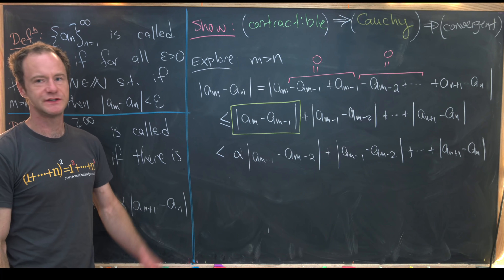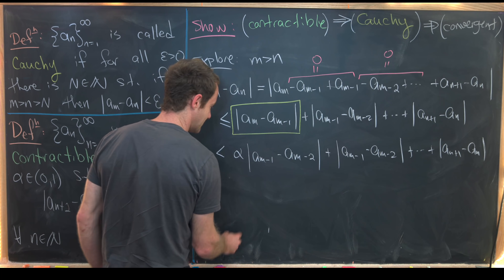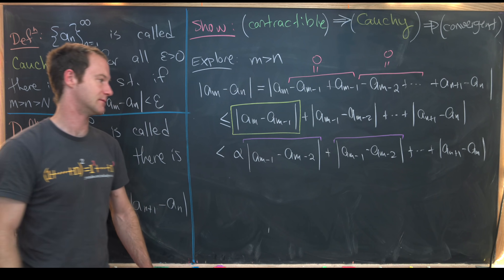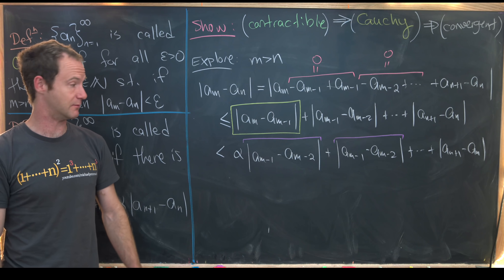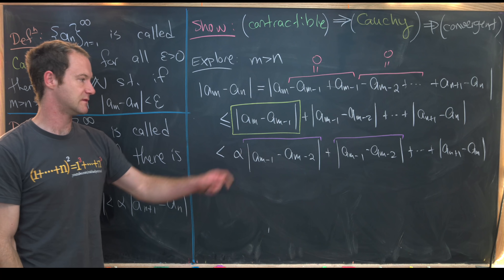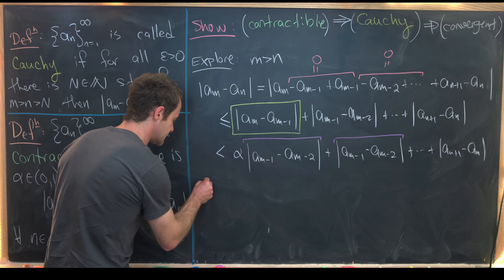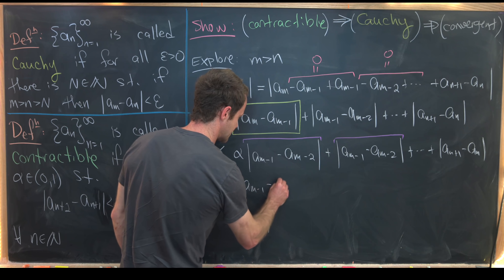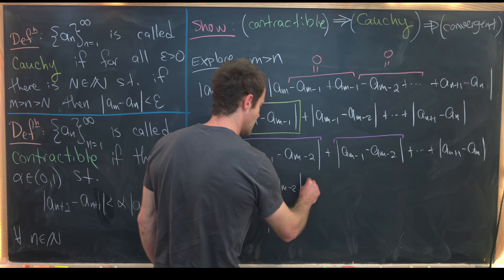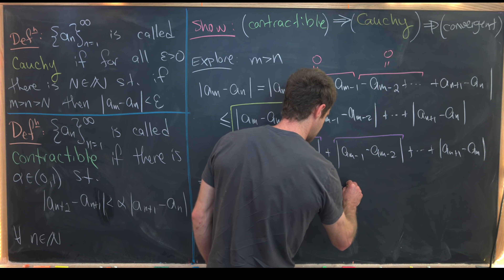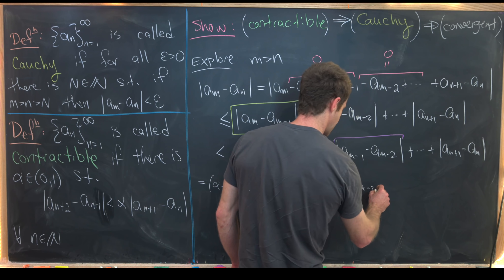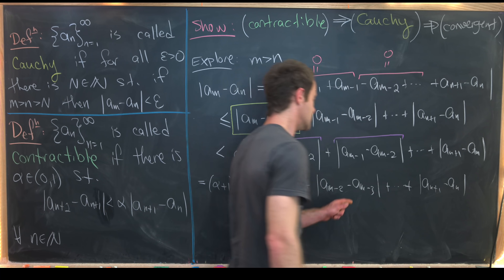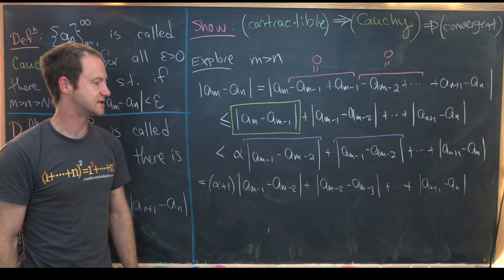We can combine like terms: |a_{m-1} - a_{m-2}| appears with a coefficient of alpha from the first term and with coefficient 1 from the second term. So this equals (alpha + 1) times |a_{m-1} - a_{m-2}| plus |a_{m-2} - a_{m-3}| + … + |a_{n+1} - a_n|.